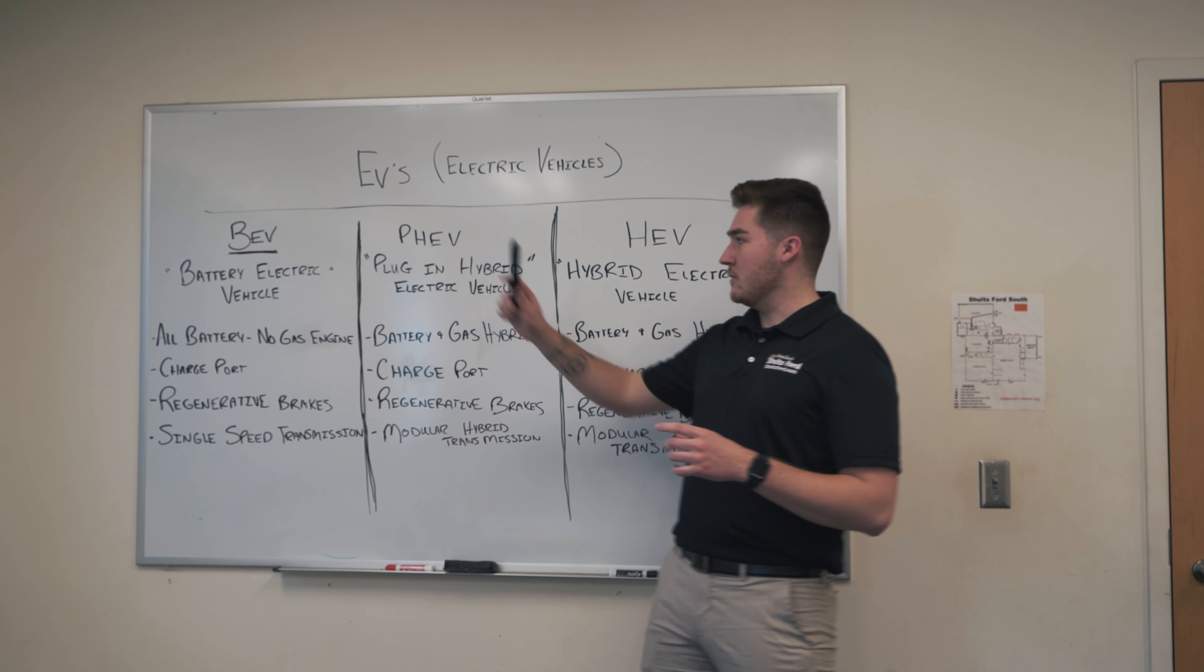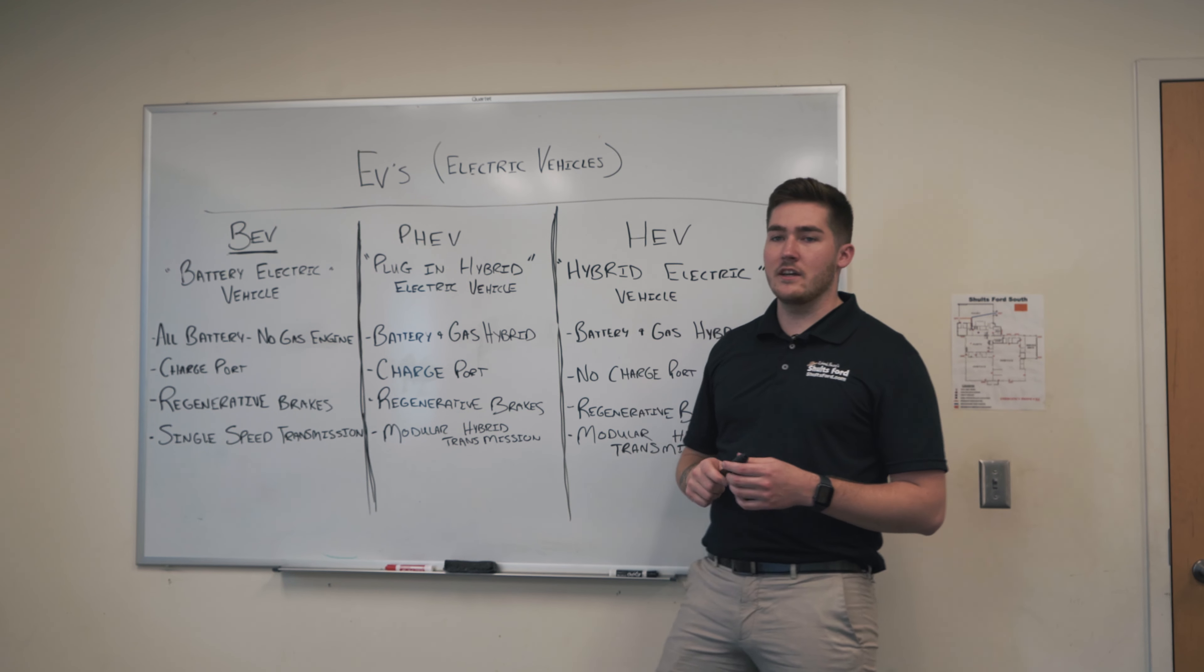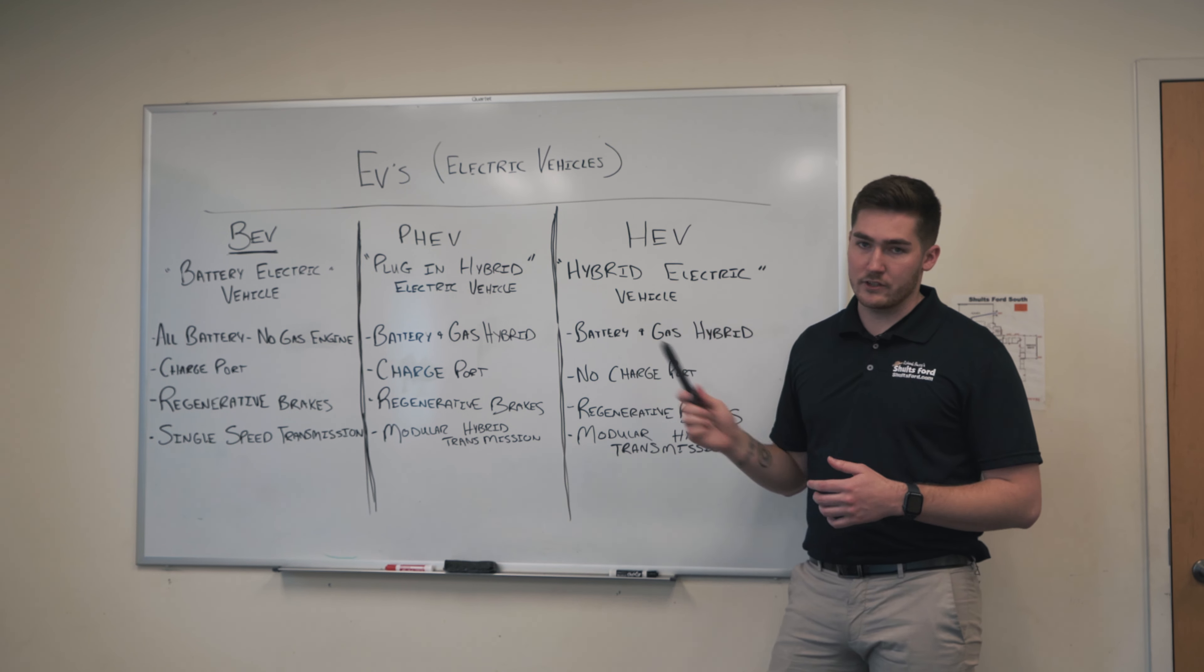So what's an EV? With EVs you'll have a BEV which is a battery electric vehicle, a PHEV which is a plug-in hybrid electric vehicle, and an HEV which is a hybrid electric vehicle.